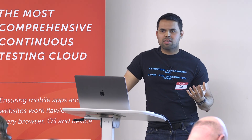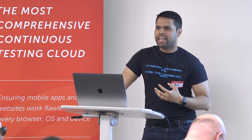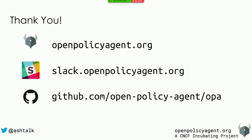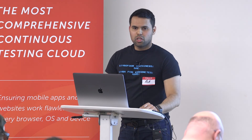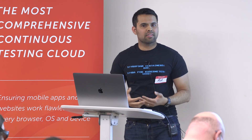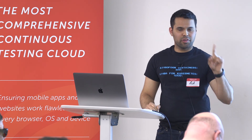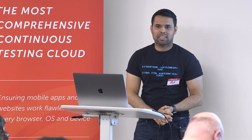This is how you deploy OPA as an admission controller in Kubernetes to enforce custom policies without having to change or redeploy any Kubernetes components. OPA is an open source general purpose policy engine that decouples policy enforcement from decision making. Check out the project at openpolicyagent.org, join us on Slack for questions and discussions, visit the project on GitHub, and if you like what you see, please star the project. Thank you.